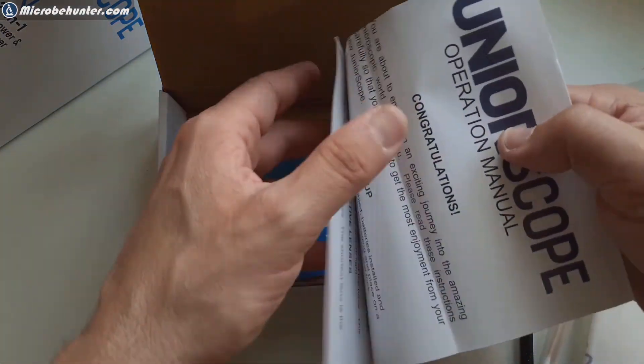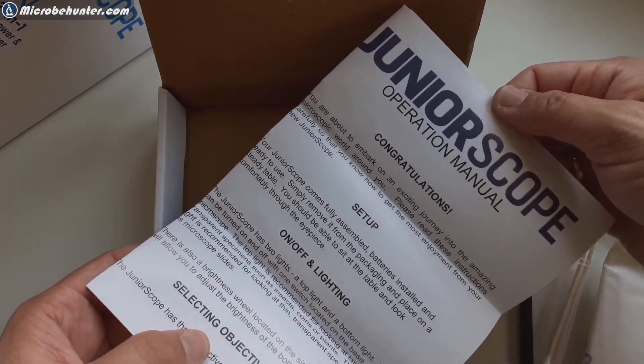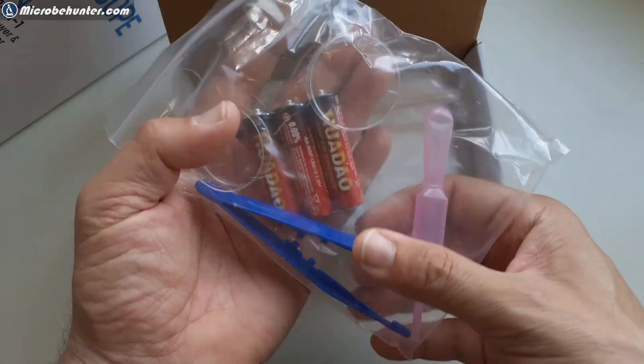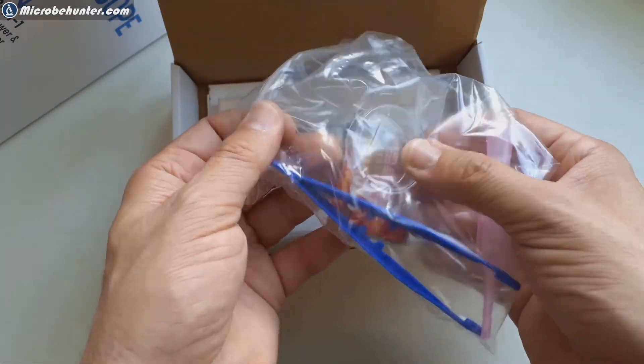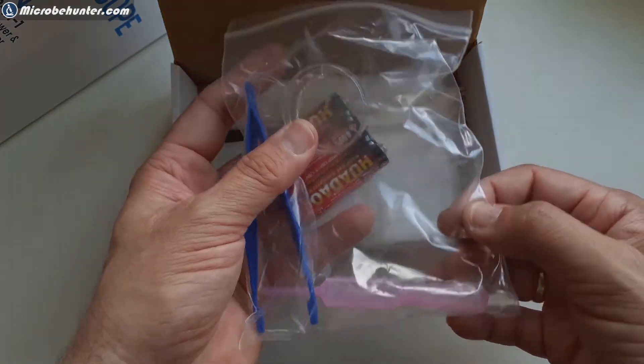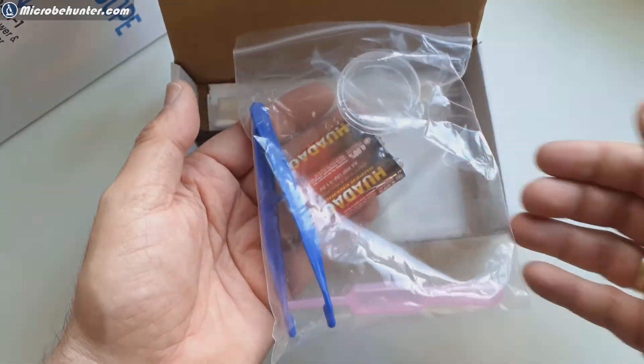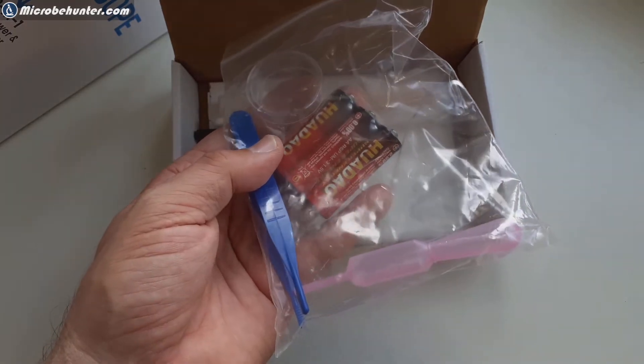Of course also the instruction manuals are here. So I had a closer look at the accessories. The plastic petri dish is used to store some water if you want to make a temporary mount and everything looks quite nice.